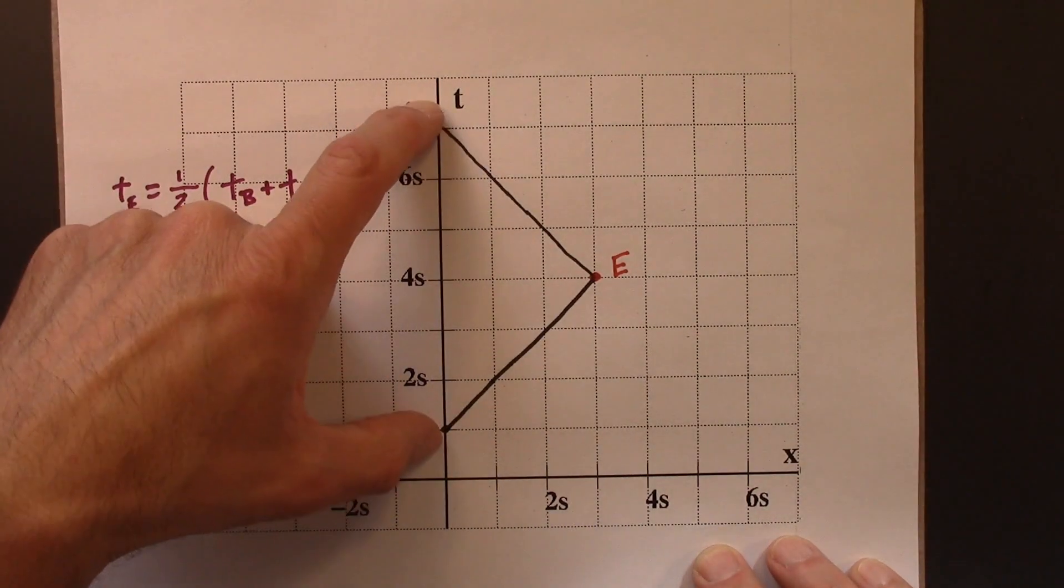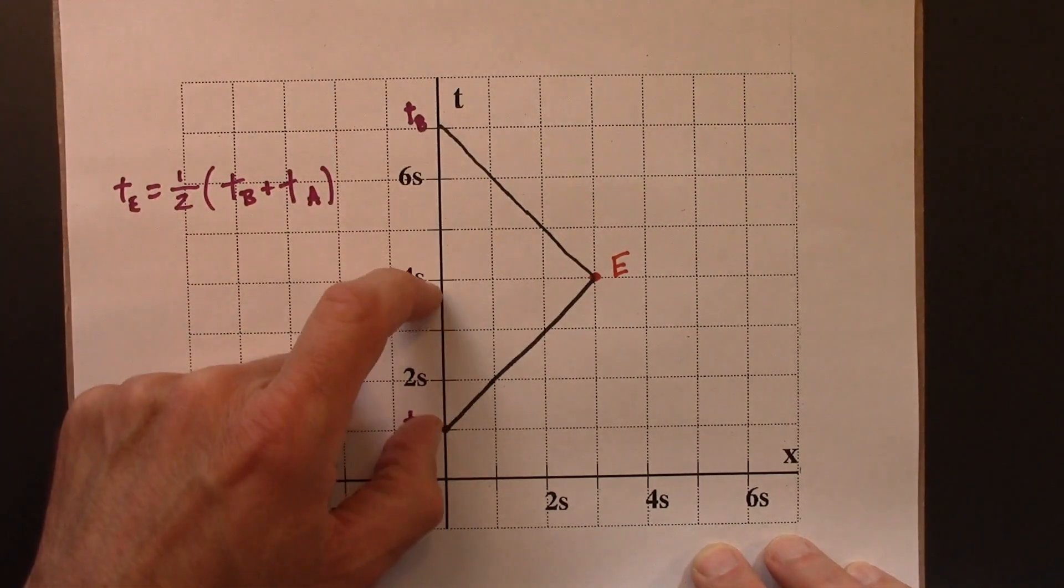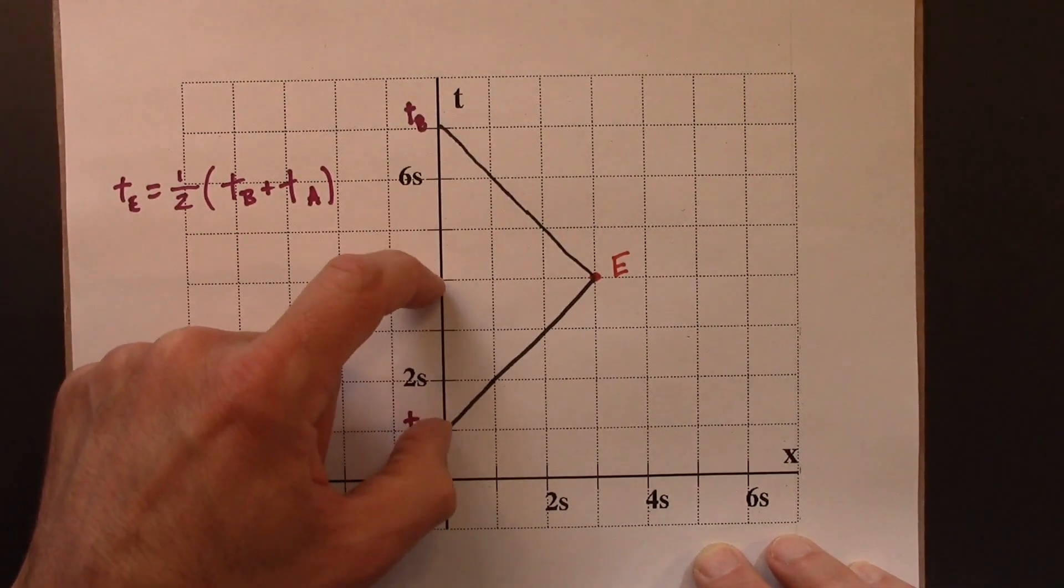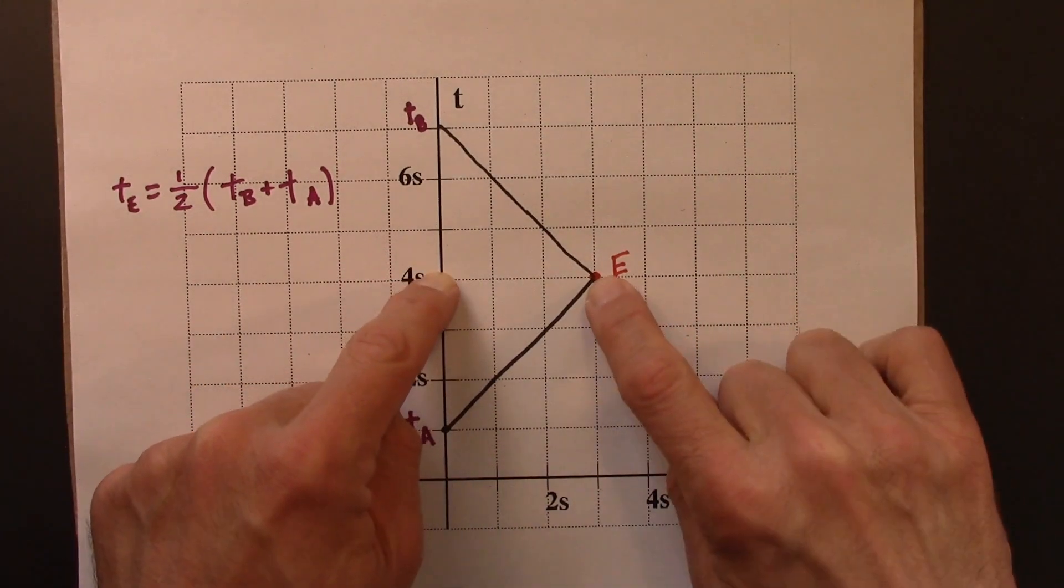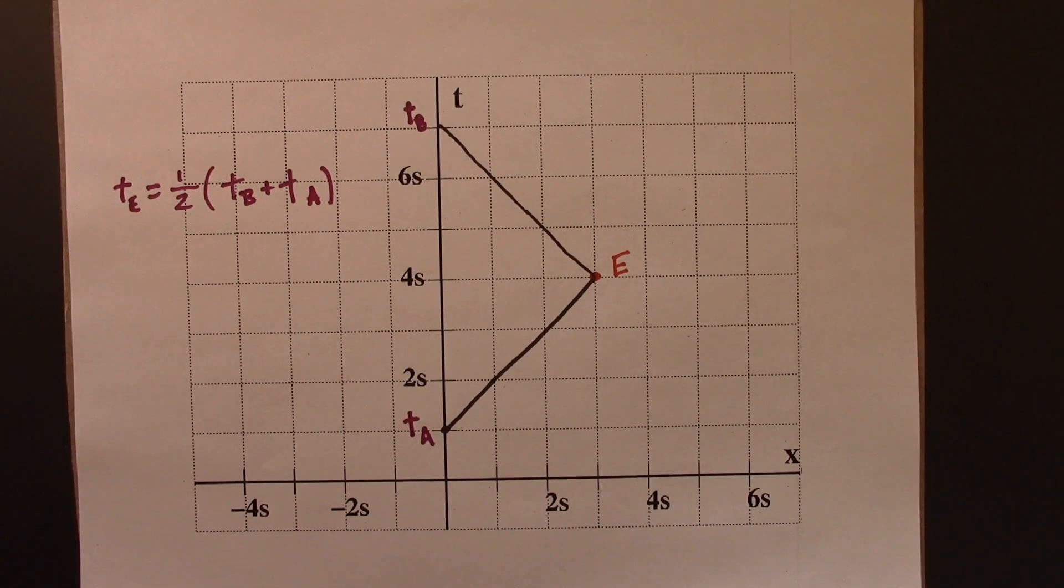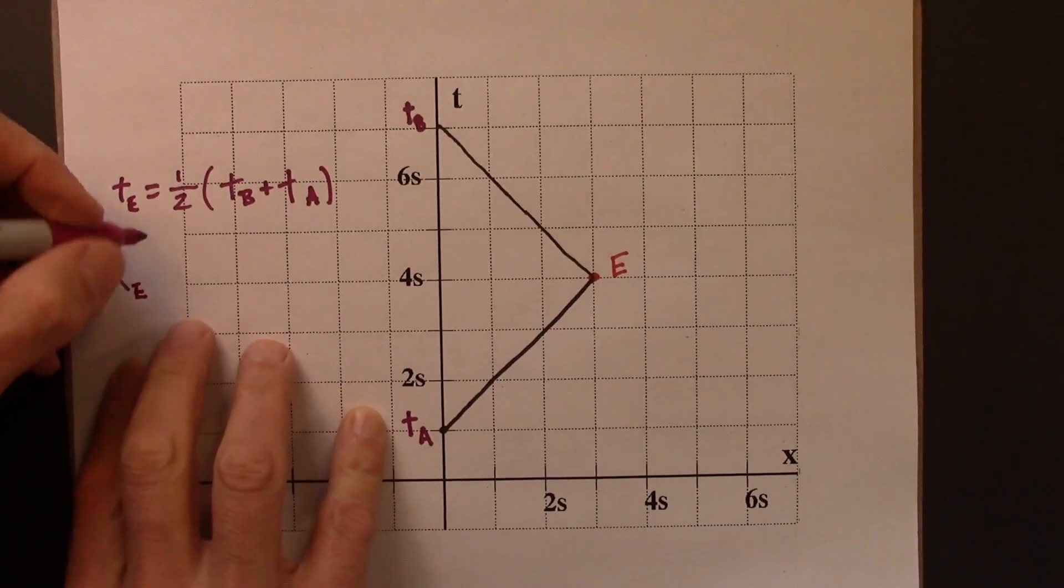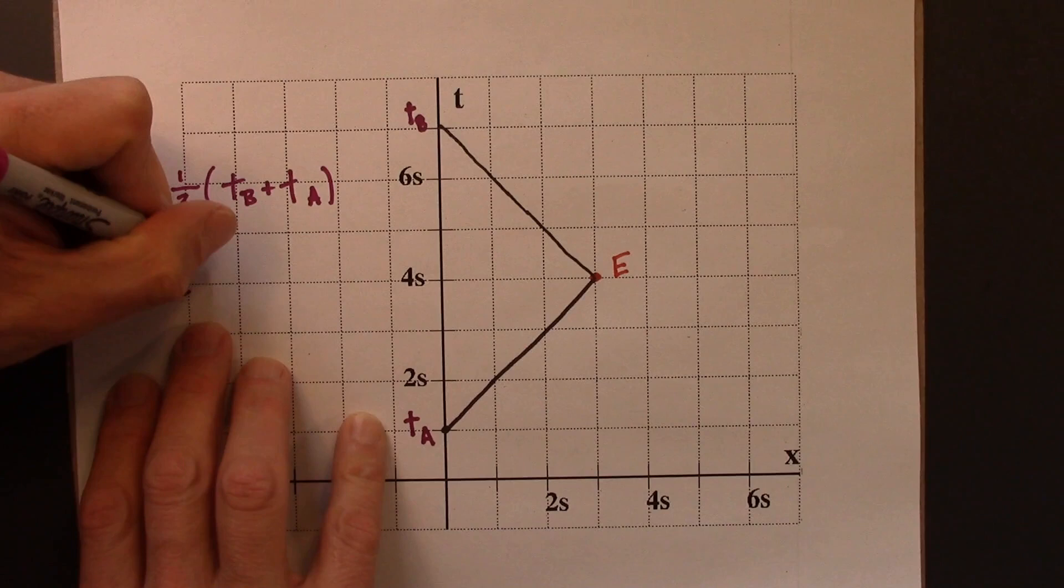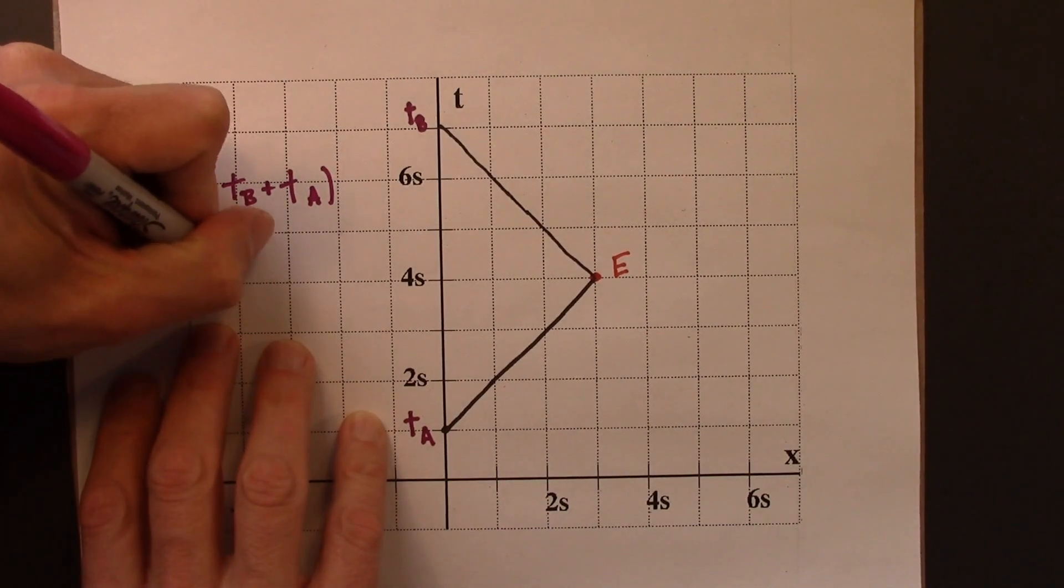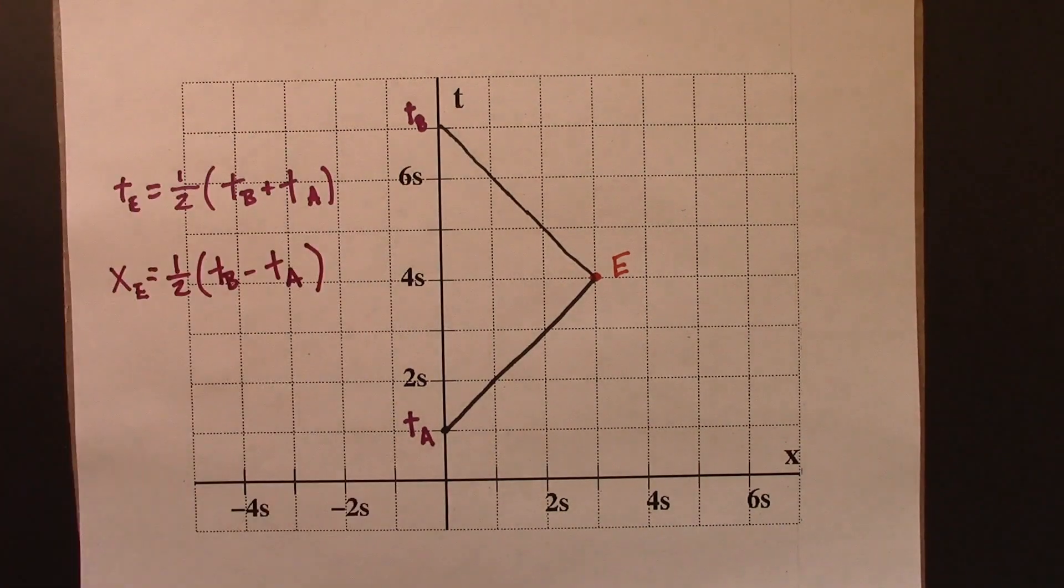I'm taking the average of this to find the midpoint between my two fingers. Here, I just want to know how far is it to halfway, and then that's going to be that amount in the X direction. So XE is going to be one half TB minus TA.